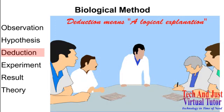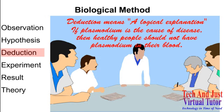And this result would be called a deduction which certainly means a logical explanation. Now, in our set incident example, the deduction was that if plasmodium is the cause of this disease, then healthy people should not have plasmodium in their blood.